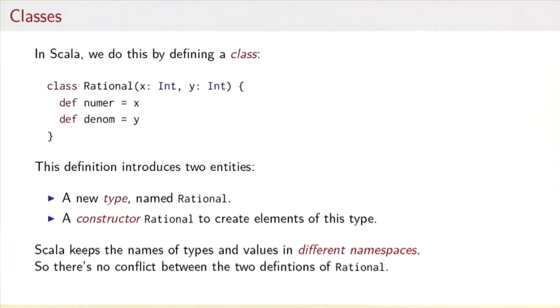In Scala we do this by defining a class. So here you see an example: we write class Rational and then we have two arguments, call them x and y. And then the rational class would have two methods.